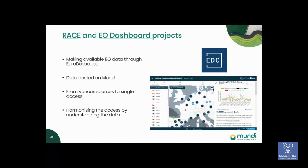We're also involved in RACE — Rapid Action against Coronavirus using Earth Observation — supporting this initiative by storing relevant data. You can find it at race.esa.int, where different data are shown on a map illustrating the impact of coronavirus on human activity around the world. It's an interesting use of Earth observation data to understand how societies are functioning.